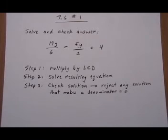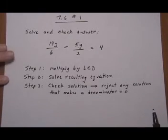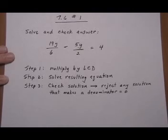Solving rational equations. This is section 7.6, number 1, and for all of the rational equations we solve, we're going to use the same three-step process.